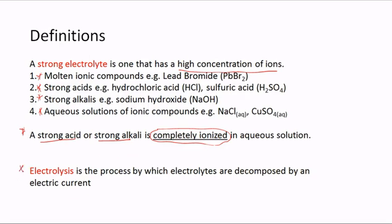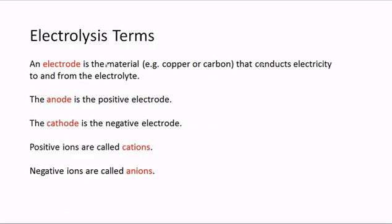You also need to know the definition of electrolysis. Electrolysis is the process by which electrolytes are decomposed by an electric current. Make sure you know this definition. An electrode is the material that conducts electricity to and from the electrolyte, and that material could be copper or carbon in the form of graphite.